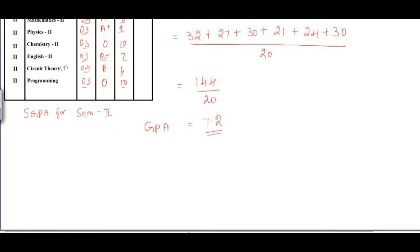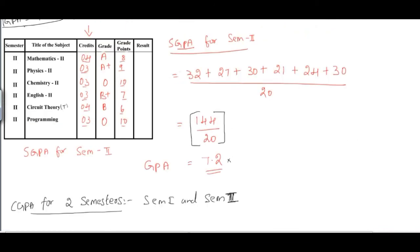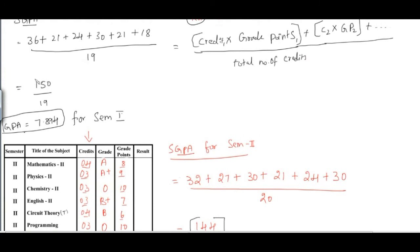Now it's time to calculate the CGPA for this student. CGPA for two semesters — she has completed two semesters using semester 1 and semester 2 data. The key data we have: from semester 2, we got 7.2 from 144/20, and from semester 1, we got 150/19, giving 7.894.